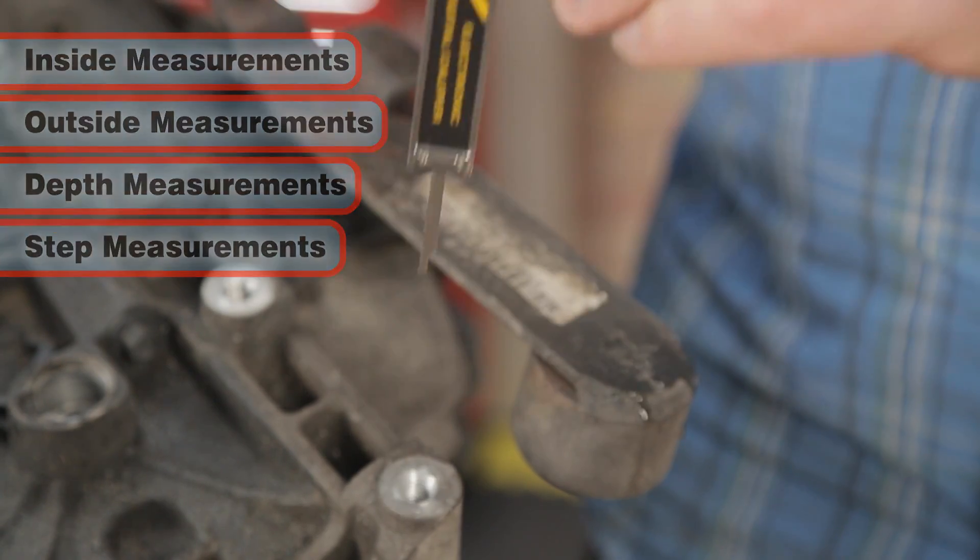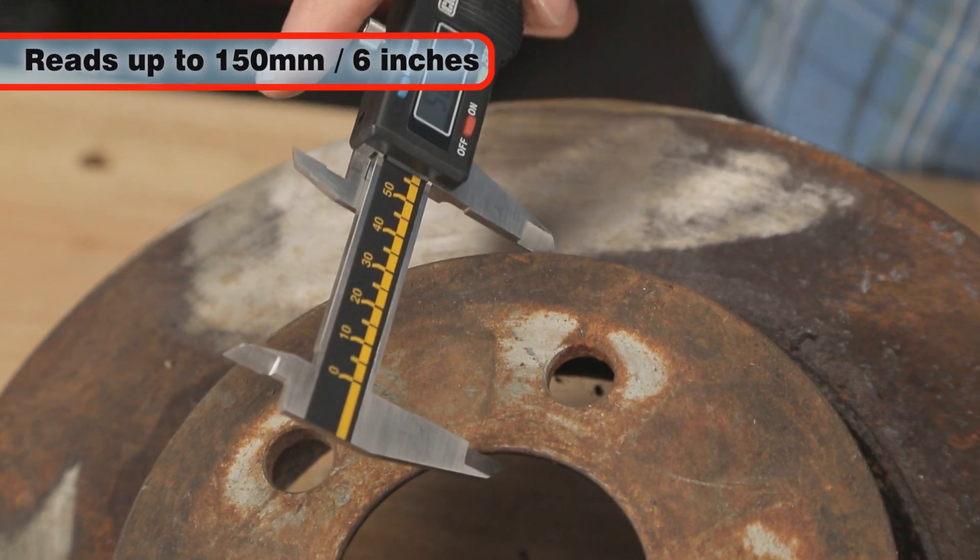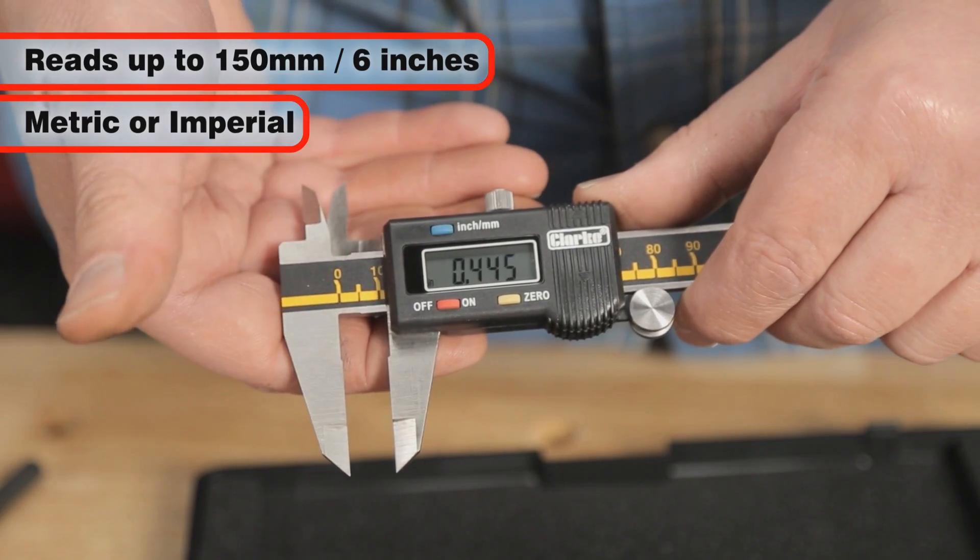The CM145 can accurately read up to 150 millimeters or six inches and any measurement can be instantly switched between either metric or imperial.